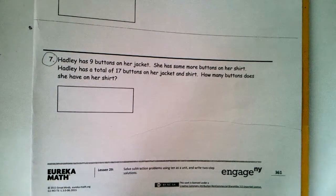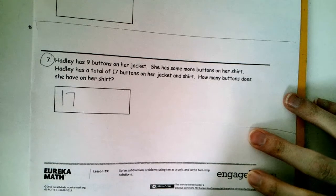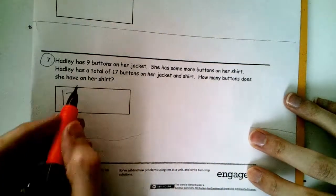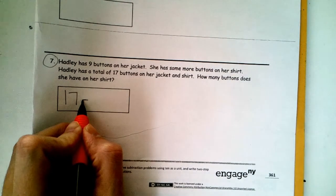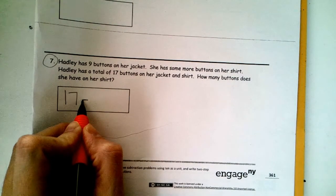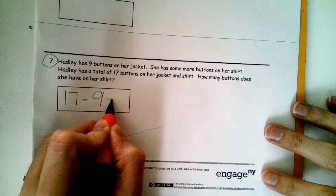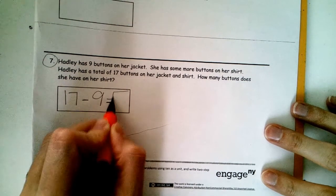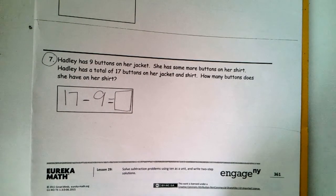She has some on her jacket and some on her shirt. I don't know how many she has on her shirt, so I must know a whole number somewhere. If I have a whole number, then hopefully I have a part too, so I can figure out the other part. Hadley has 9 buttons on her jacket. She has some more buttons on her shirt. She has a total of 17 buttons on both her jacket and shirt. So, how many buttons does she have on her shirt? Hopefully you picked out 17 as your whole number. We know that she has these on her jacket. How many does she have on her jacket? Because I'm trying to find a missing part, I'm going to subtract. She has 9 on her jacket. So, equals, this is going to give me the number that is on her shirt. The number of buttons on her shirt.